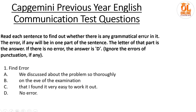Read each sentence to find out whether there is any grammatical error. The error, if any, will be in one part of the sentence, and the letter of that part is the answer. If there is no error, the answer is T. The sentence: 'We discussed about the problem so thoroughly on the eve of the examination that I found it very easy to work it out.' The word 'about' is unnecessarily placed here. It should be: 'We discussed the problem so thoroughly...' So the answer is option A — option A has the error.